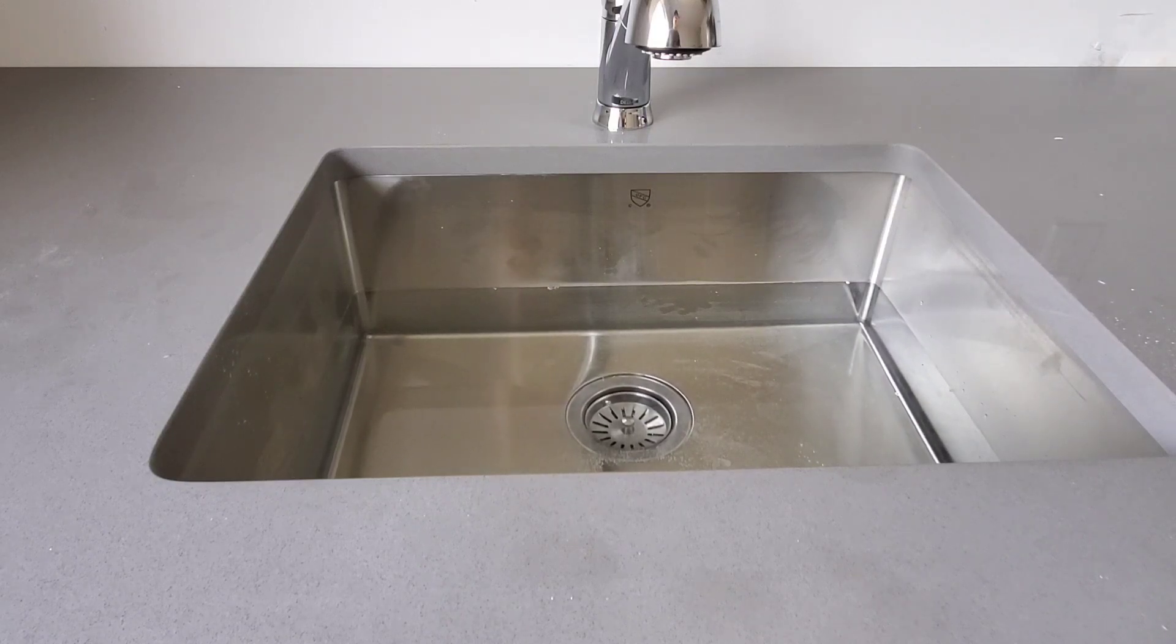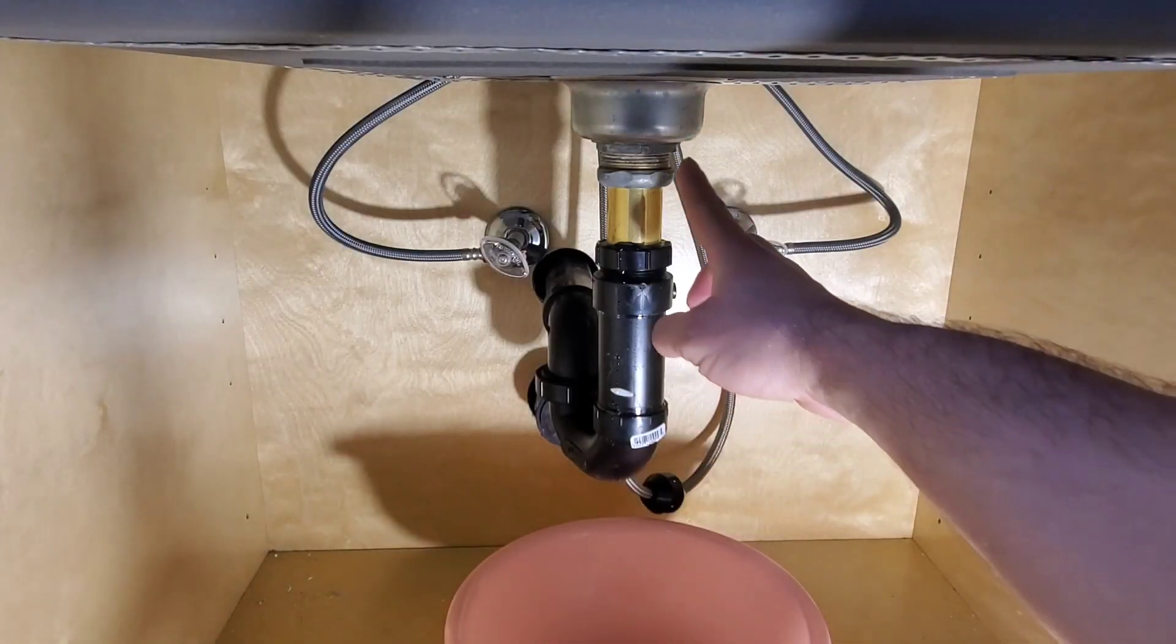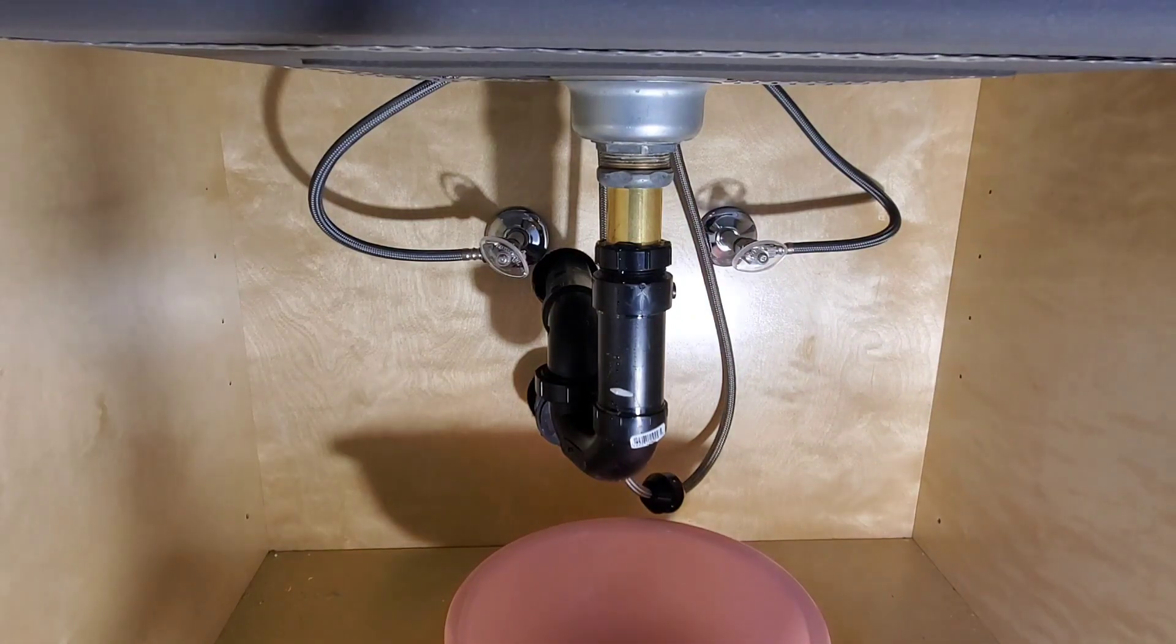What I'm going to do now is test the drain. This is the proper way to test a sink because you need to have a huge volume of water to put pressure everywhere. If you just send a trickle down the drain you're not going to get a proper test. It's dripping from this nut, so more than likely it just needs to be tightened up.